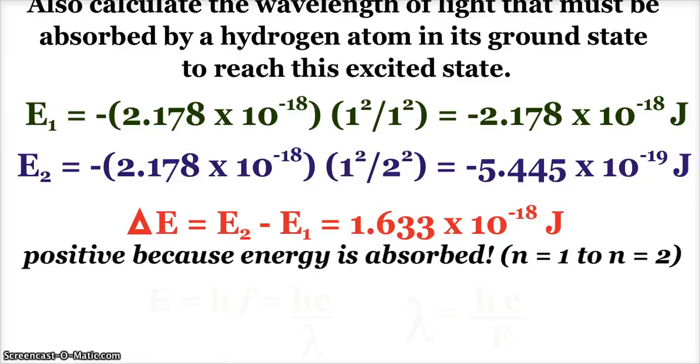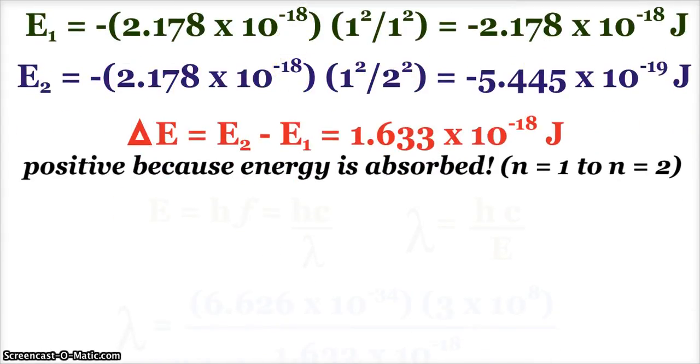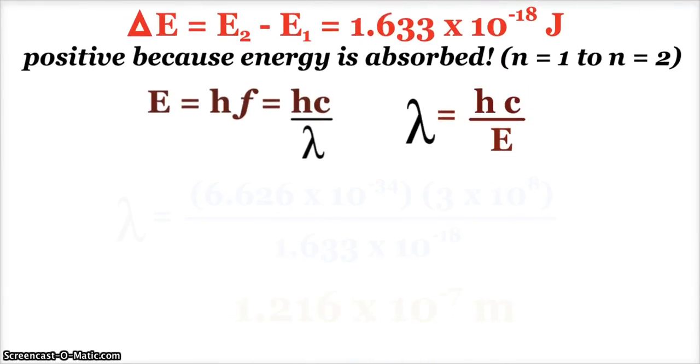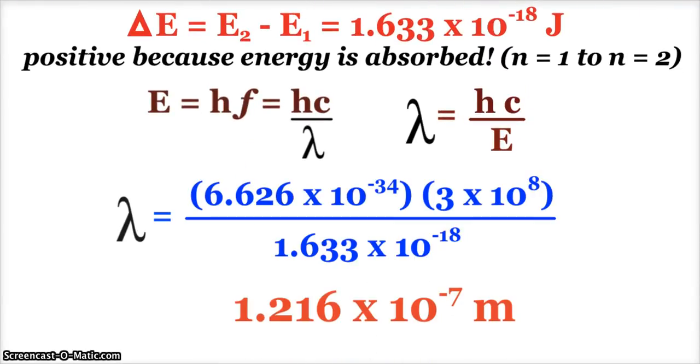So that's part of it. But again, they want us to also calculate the wavelength. And so, of course, we know that the wavelength, E equals the Planck's constant times frequency, which frequency is C over lambda. And then to find lambda wavelength, we just have to do Planck's times the speed of light divided by the energy. And so there, plug and chug, and we see the wavelength associated with that electron transition.